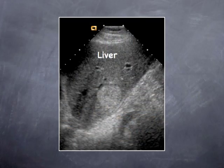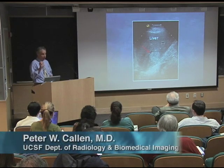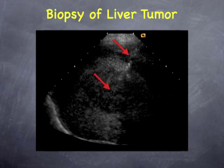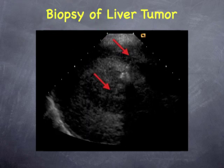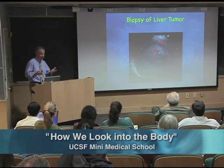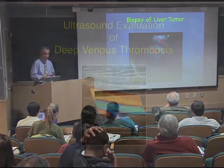Here's a patient that has a scan of the liver. This patient had abnormal liver function tests, and the doctor was concerned about there being an abnormality in the liver. Sure enough, if we look inside the liver, we see a mass inside the liver. Again, we'll use ultrasound, just like we did in the thyroid, to place a needle using ultrasound guidance into this mass to sample it and detect whether or not there is a tumor or some other abnormality of the liver.